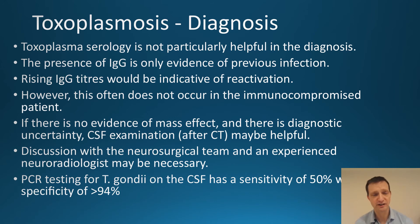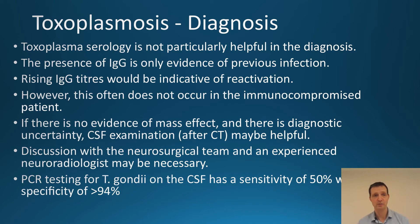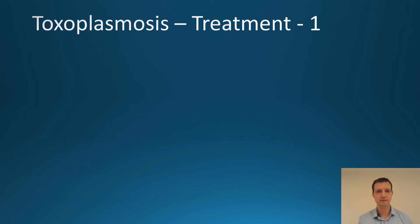Toxoplasmosis serology is not particularly helpful because many people have had prior infection. Rising IgG titres are said to indicate reactivation, but in the immunosuppressed with a poor immune system they may not rise rapidly. CSF examination after CT may be helpful. If CSF is obtained, it should be sent for PCR testing. The sensitivity is around 50%, which isn't great, but the specificity is 94%.